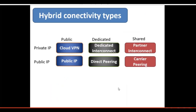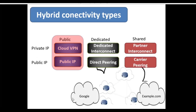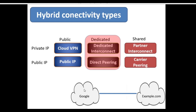This slide shows six types of hybrid connections, divided into private IP and public IP access. From a network connectivity point of view, there are public, dedicated, and shared options. For public, the data transfer between your on-prem system and Google Cloud goes over the public internet, which you can achieve using a public IP address or Cloud VPN. For dedicated, there is a physical link — a VLAN, a physical cable — piped directly between your on-prem and Google.